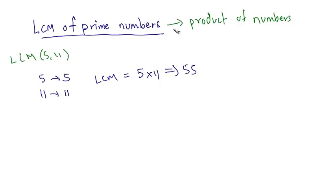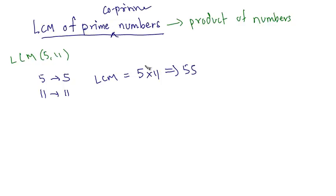Thus, we can easily say that if we have to calculate the LCM of prime numbers, it is the product of those numbers themselves. Similarly, if we have to calculate the LCM of co-prime numbers, it is again the product of those numbers.